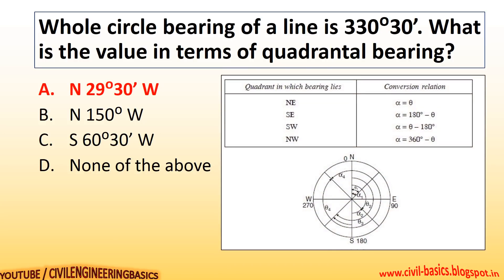The whole circle bearing of a line is 330 degrees and 30 minutes. What is the value in terms of quadrantal bearing? The quadrantal bearing will be North 29 degrees 30 minutes West.